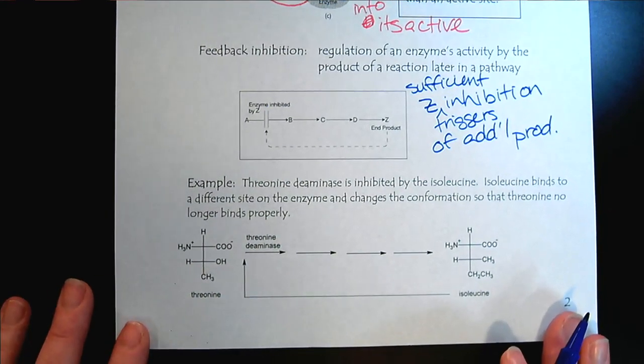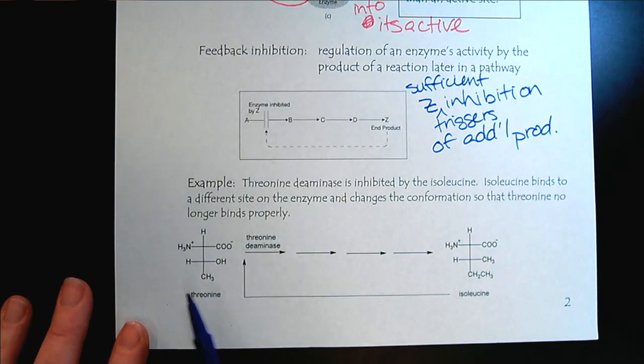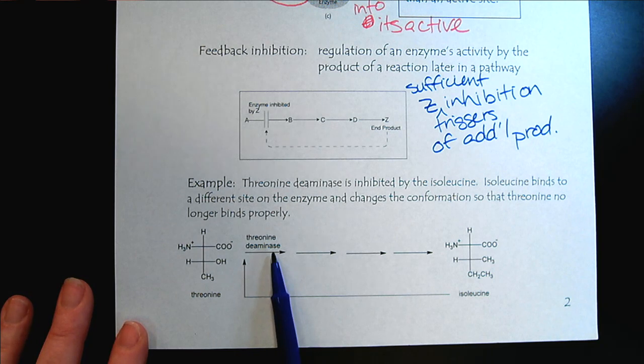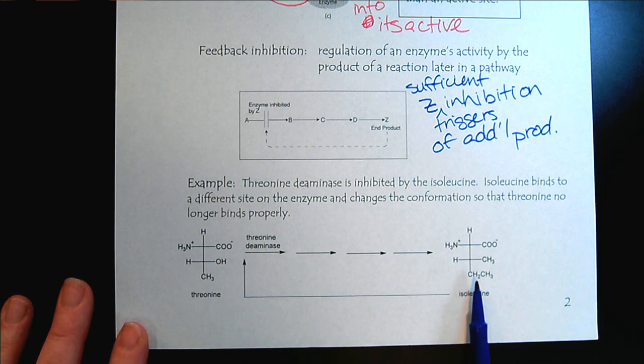So here's an example. The amino acid threonine can be converted into isoleucine. And the first enzyme in this pathway is threonine deaminase, so we can imagine something is happening with the amine group.